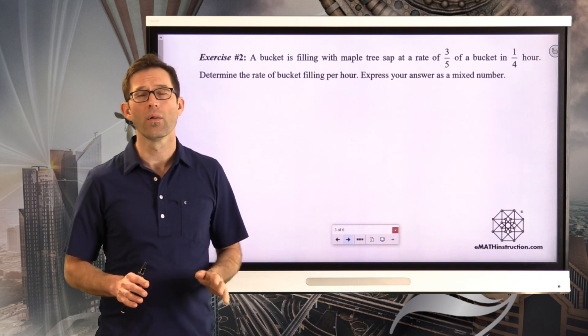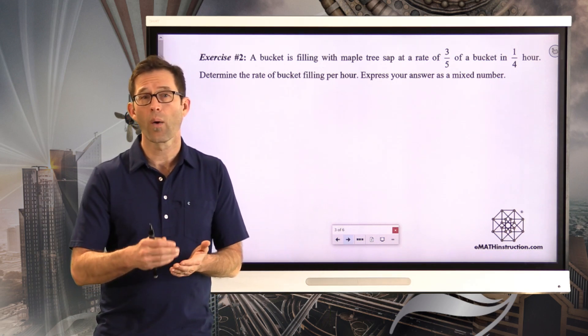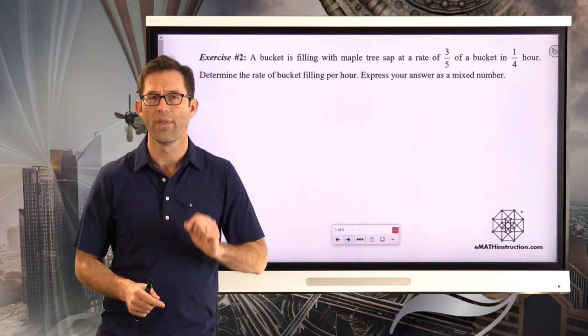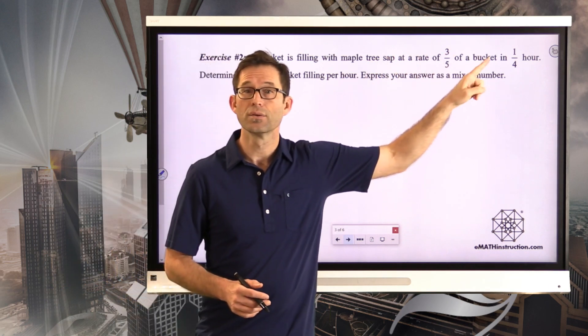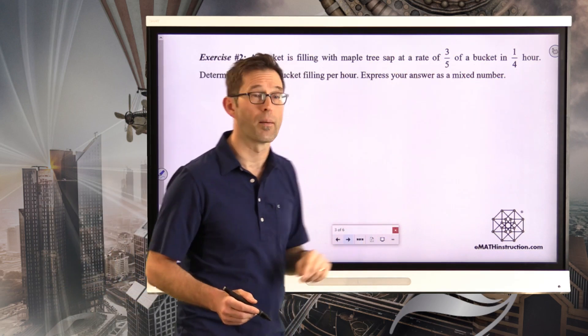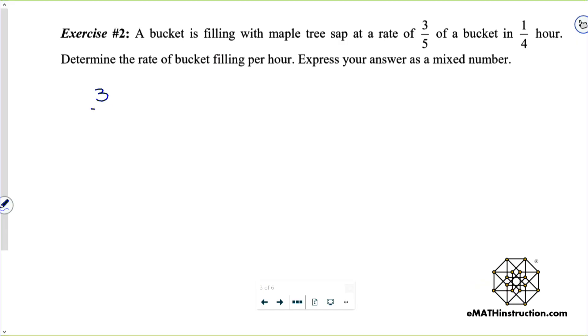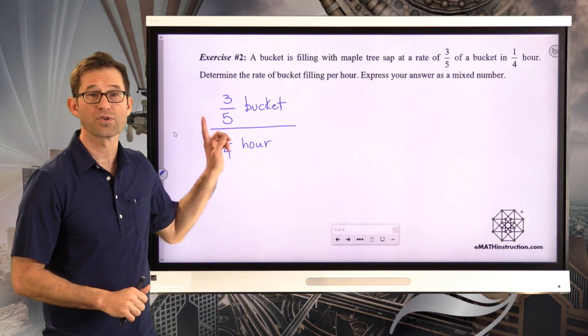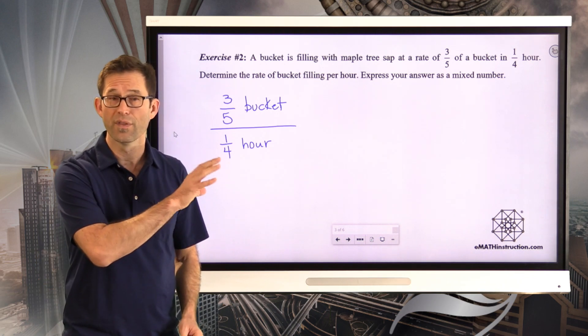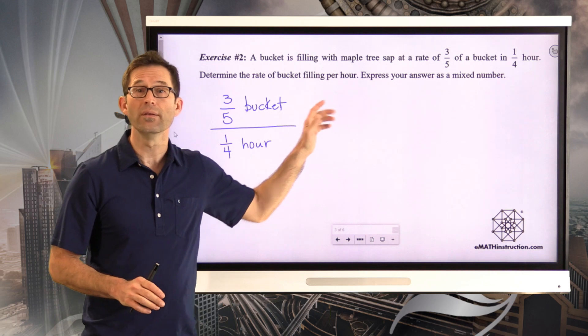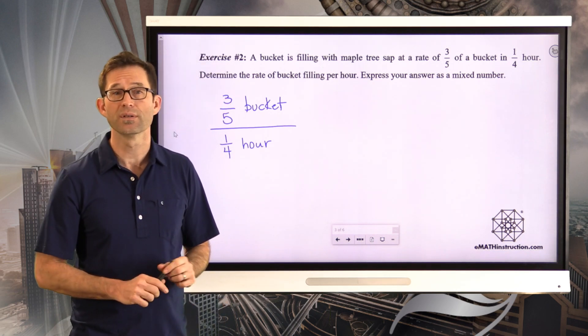I know it doesn't say per one hour, but it never will typically when it's a unit rate. It'll be per hour, per mile, per foot, and they won't typically put in the one there. So let's think about this a little bit. I want the rate of bucket filling per hour. So that means the buckets should be in the numerator and the hours should be in the denominator. So let's set up the ratio together and then see if you can figure out the right answer. What we know is that we've got three-fifths of a bucket that's filled in per one-quarter hour. So that's our fundamental ratio. And of course it's a complex fraction because we have a fraction divided by a fraction. So now what I'd like you to do is try to pause the video, simplify this complex fraction, and then try to state that unit rate in terms of a mixed number and make sure to use proper units. Pause the video now.